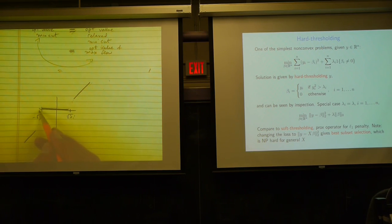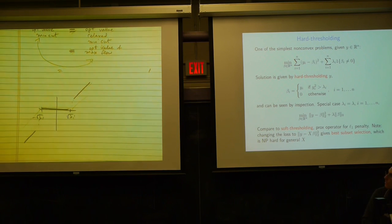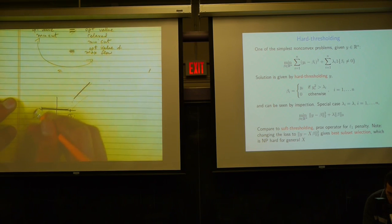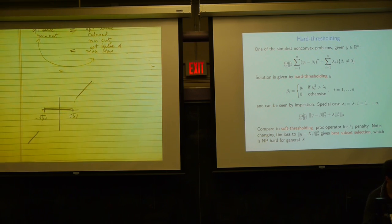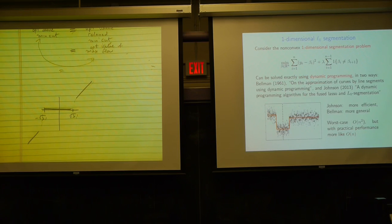With all λi equal to λ, the problem is to minimize the Frobenius norm plus λ times the number of non-zeros. Compared to soft thresholding (the prox operator for the L1 penalty), hard thresholding doesn't subtract any amount from yi — it either leaves it alone if it's large enough or sets it to zero, producing a discontinuous operator.